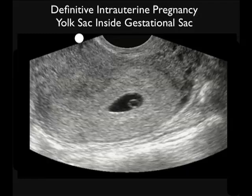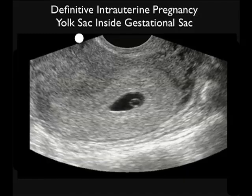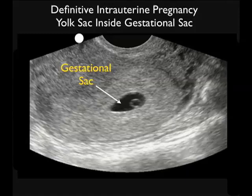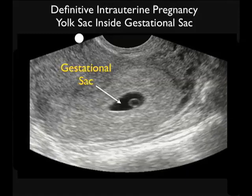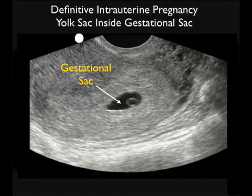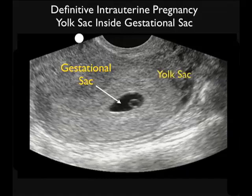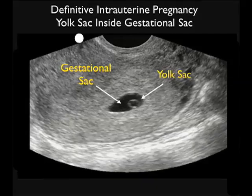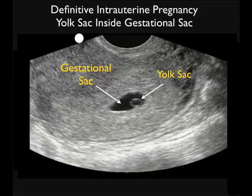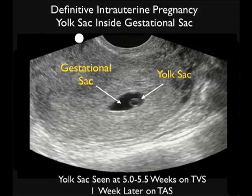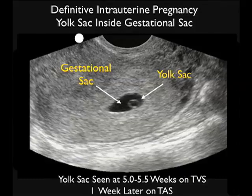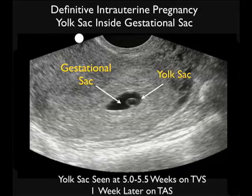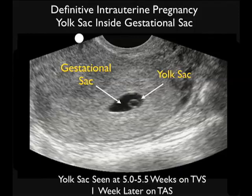Here's a video clip showing a definitive intrauterine pregnancy. We see a larger gestational sac, and inside we see the positive yolk sac, or cheerio sign. Notice the circular yolk sac towards the inferior aspect of the gestational sac. This is diagnostic of an intrauterine pregnancy, effectively ruling out ectopic pregnancy in the vast majority of patients. Remember, the yolk sac is seen at about 5 to 5.5 weeks on transvaginal sonography and about a week later on transabdominal sonography.